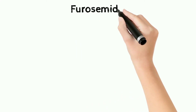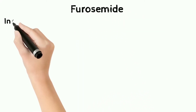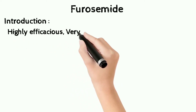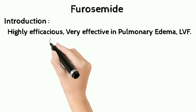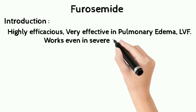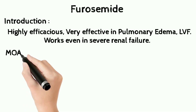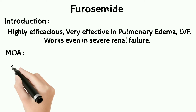Furosemide is a loop diuretic and it is highly efficacious. It can be used in cases of pulmonary edema and left ventricular failure, providing quick relief. High efficacy means it causes a high amount of diuresis. It also works even in severe renal failure, and that is the importance of furosemide.